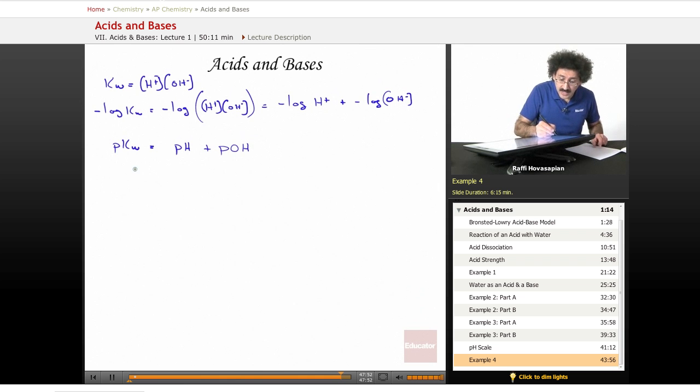Well, pKw is the negative log of 1.0 times 10 to the negative 14 equals pH plus pOH because Kw is 1 times 10 to the negative 14. The negative log of that is 14. That's our final relationship.